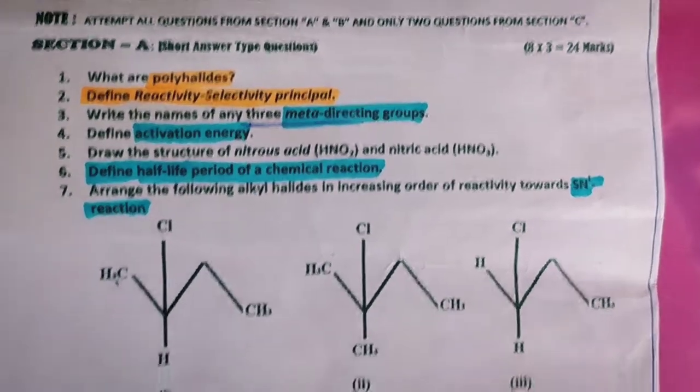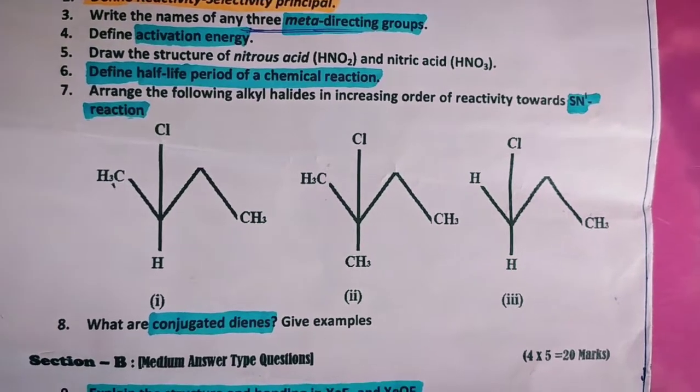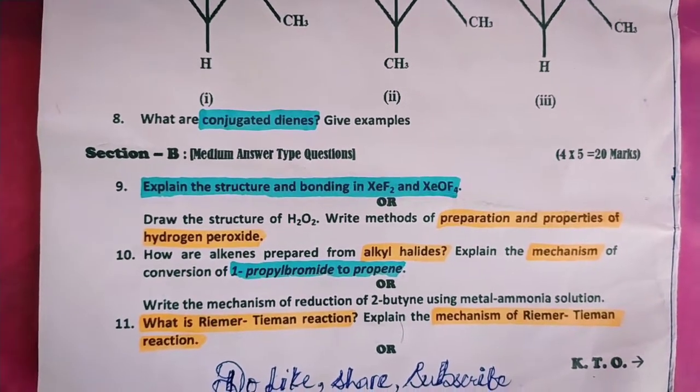What are conjugated dienes? Give examples. Section B is medium answer type questions carrying five marks each.